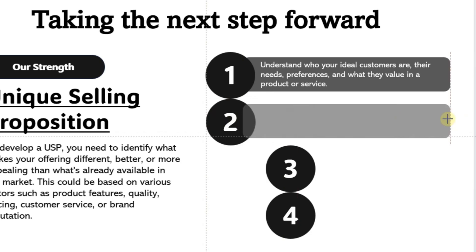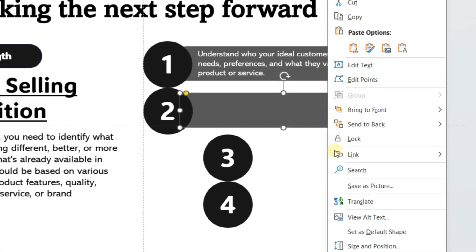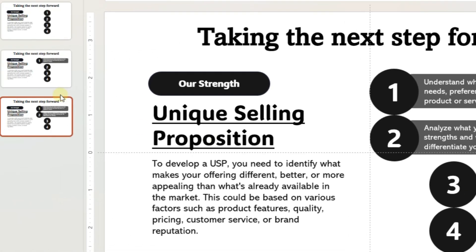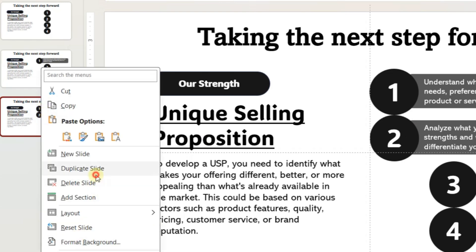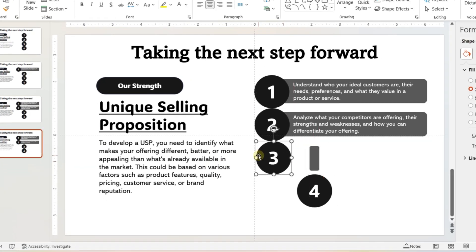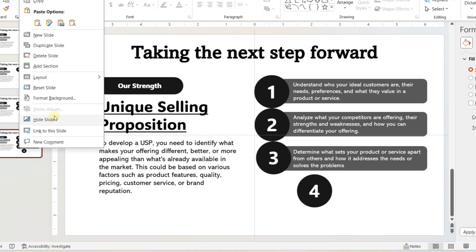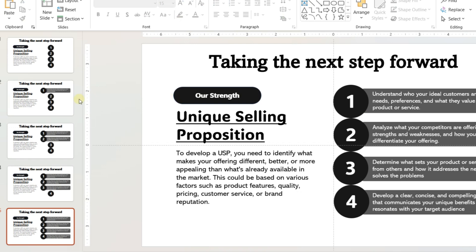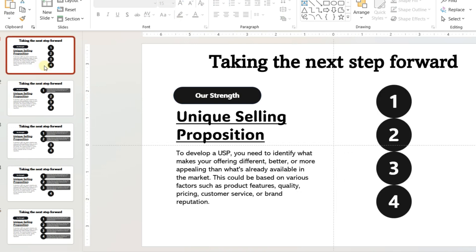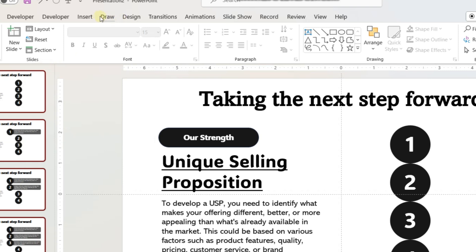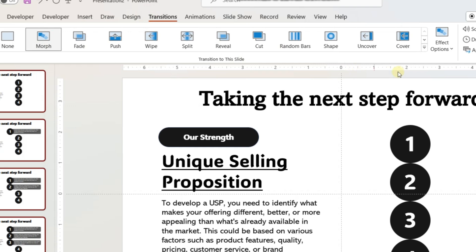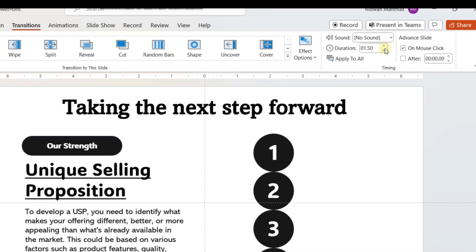Do not create all the duplicate slides in one go. Create a duplicate one at a time, change the content, and follow the same process. Once all the slides are created, select all the slides and go to the Transition tab. Select morph transition and change the duration to 1.5 seconds. The second slide deck is ready now.